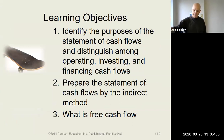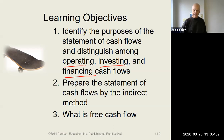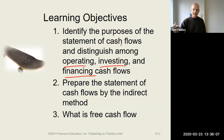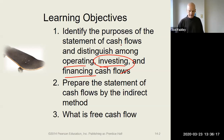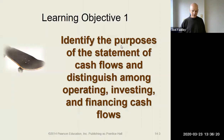When we start talking about putting one of these together — and I would expect you to be able to do this on the exam — you've got to have operating, you've got investing, and you've got financing. Operating is your core business. Investing is how you deal with long-term assets. Financing is how you finance your business: through selling bonds, through selling stock.